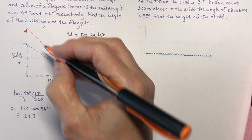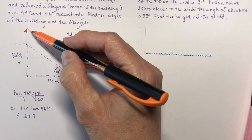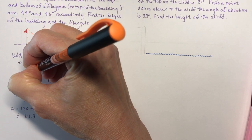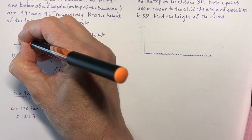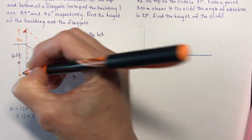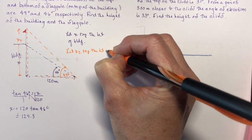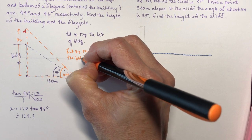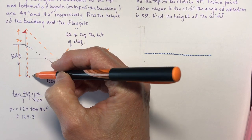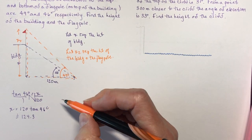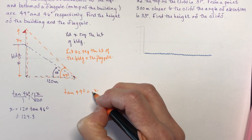Now for the flagpole: I can't use just the 49-degree angle alone because that smaller triangle isn't a right triangle. I'll use the big right triangle from ground level all the way to the top of the flagpole. Let x2 represent the total height of the building plus the flagpole. Tan of 49 degrees equals x2 over 120, so x2 equals 120 times tan of 49.